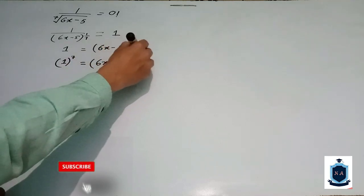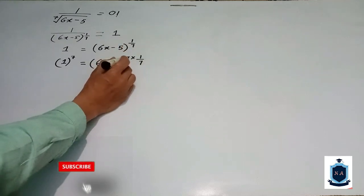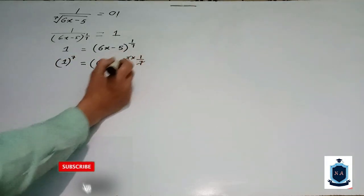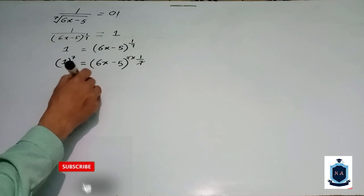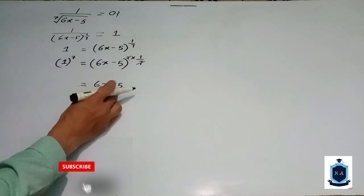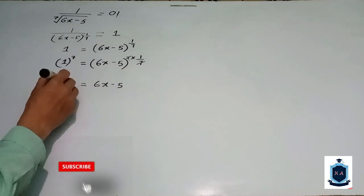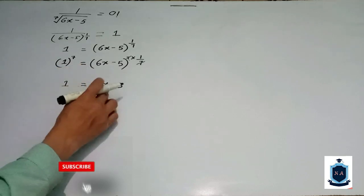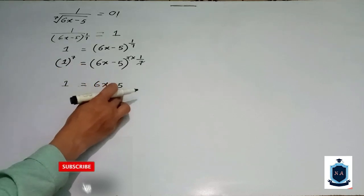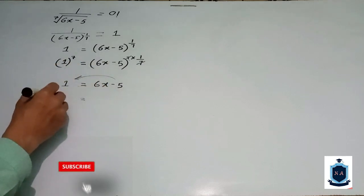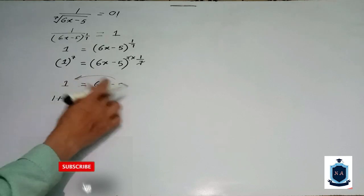Here you can see that seven cancels, so the next step is six x minus five equals one. Now, minus five is on the left side; if I transfer it to the right side, the sign will change, giving one plus five — so six x equals six.